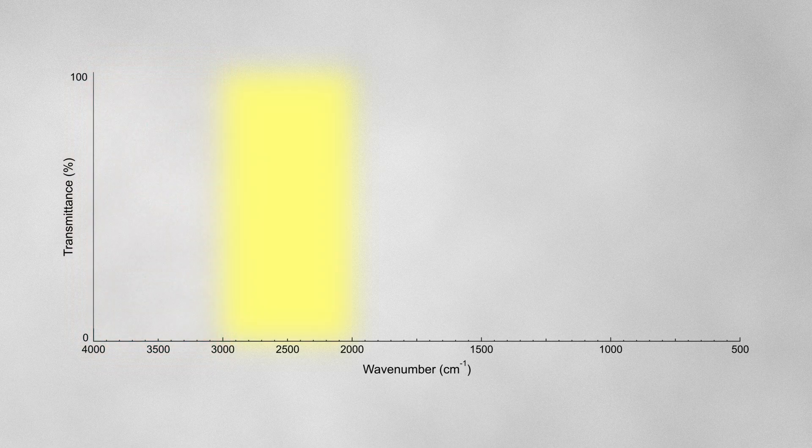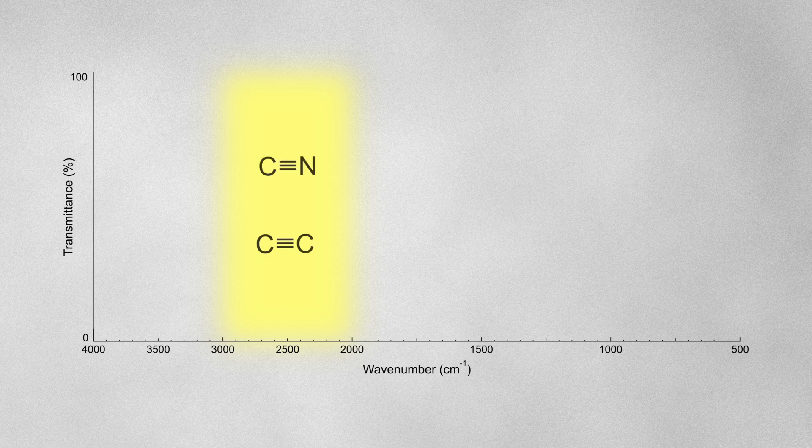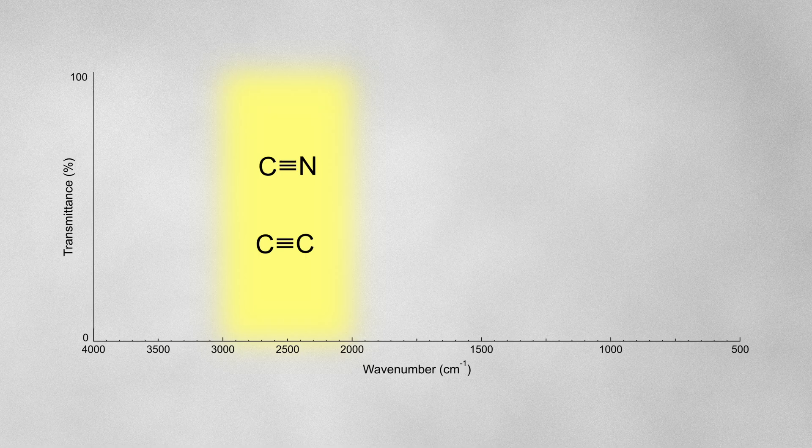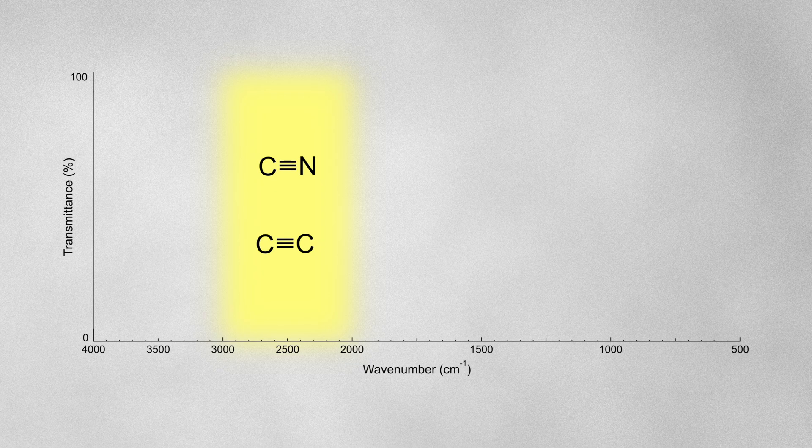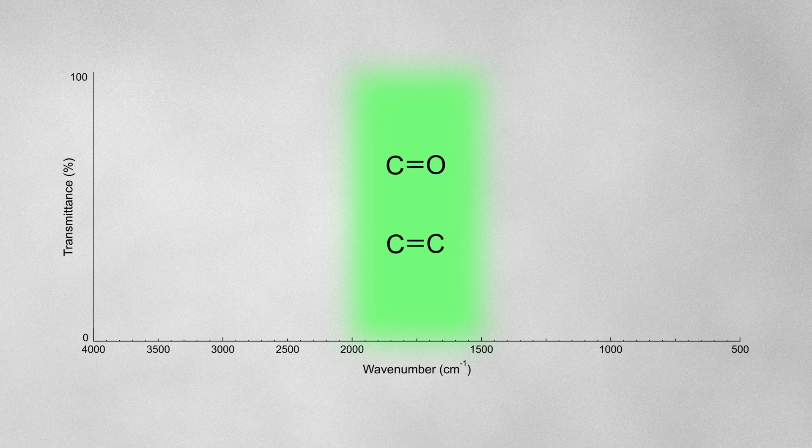Absorptions in the region 3000 to 2000 are typically due to triple bonds. These will involve heavier atoms than hydrogen, so they'll vibrate at slightly lower frequency than those bonds. But remember, the second factor that affects the frequency of a bond vibration is the strength of the bond. Triple bonds are strong, so they vibrate at relatively high frequencies. Absorptions in the region 2000 to 1500 are typically due to double bonds, which have a lower frequency than triple bonds since they're weaker.